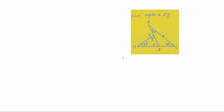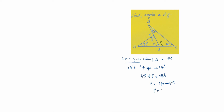The sum of all angles of a triangle is 180°. So we take the unknown angle as p. Then: 25° + 40° + p = 180°, which gives us 65° + p = 180°, so p = 180° − 65° = 115°. We now have p = 115°.